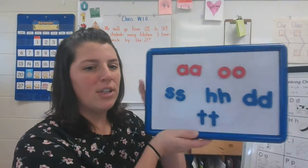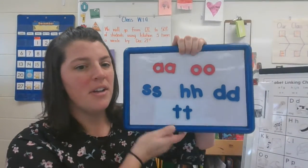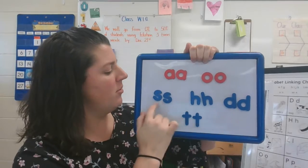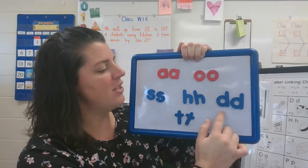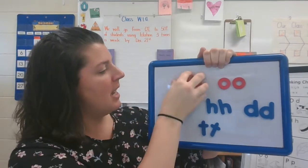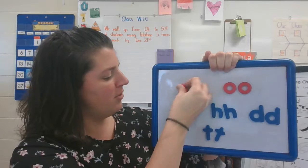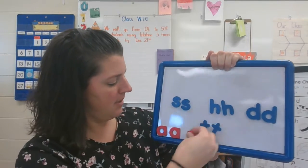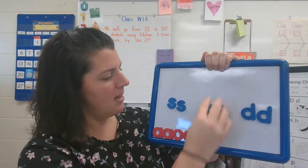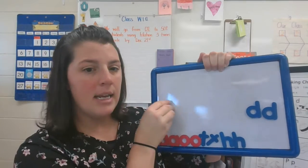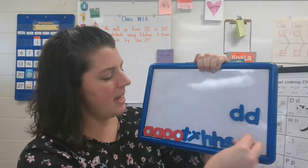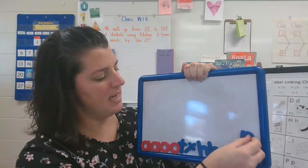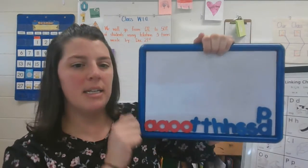All right, friends. Hopefully you have found all these letters. We needed two A's, two O's, two S's, two H's, two D's, and two T's. I'm going to move my letters down to the bottom. And like I said, we're going to change one of these D's and make it a P. That's how we're going to be using it today.